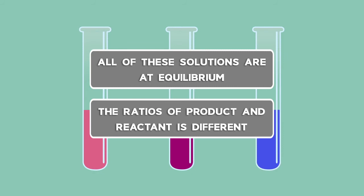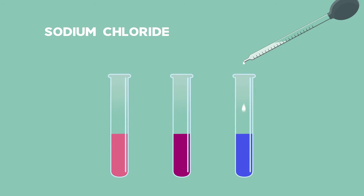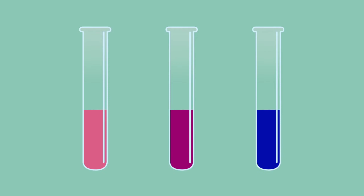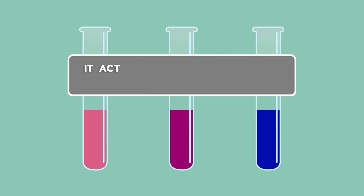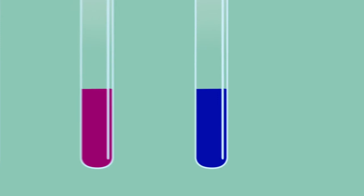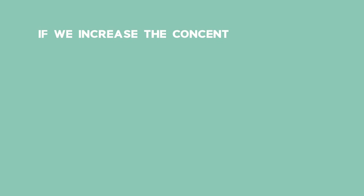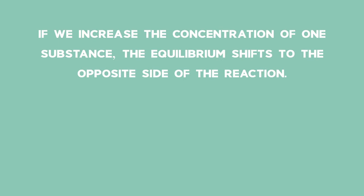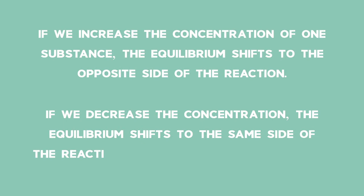When we add sodium chloride in dropwise form, we have increased the concentration of chloride ions. Because the system wants to restore equilibrium, it acts to reduce the chloride ion concentration again. So the forward reaction is favoured, shown by the solution turning blue. In summary, if we increase the concentration of one substance, the equilibrium shifts to the opposite side of the reaction. If we decrease the concentration, the equilibrium shifts to the same side of the reaction as the decreased substance.